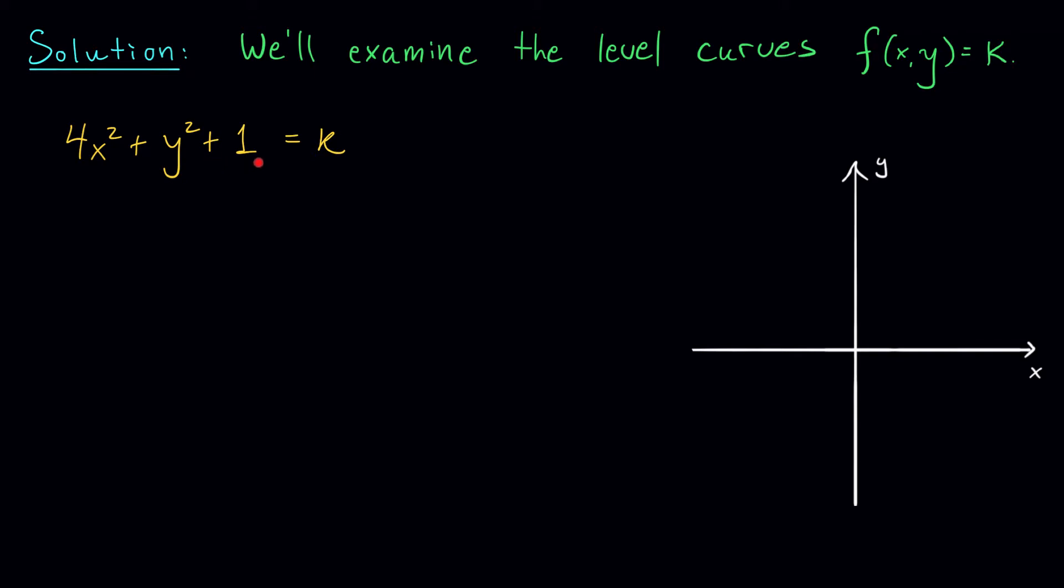Well, to figure it out, I'm going to move that 1 to the other side. I'm going to group it together with my other constant, k. That gives me 4x² + y² = k - 1.